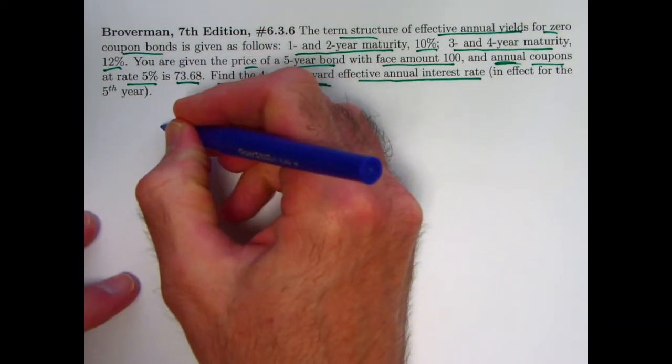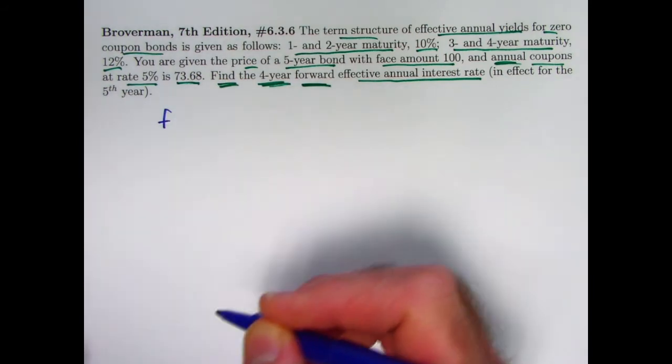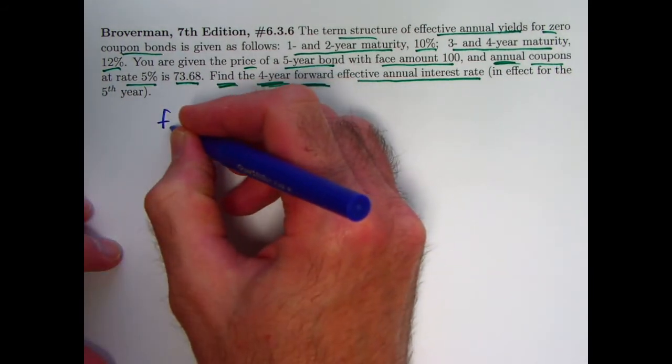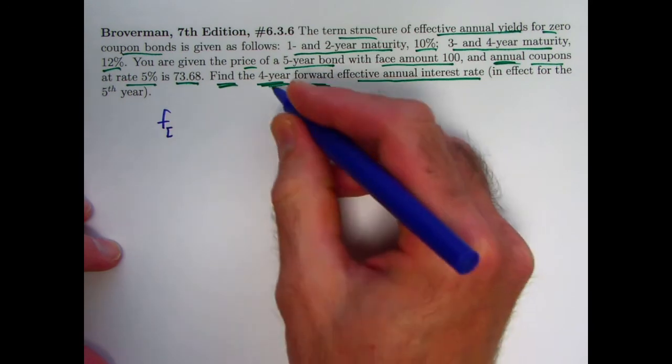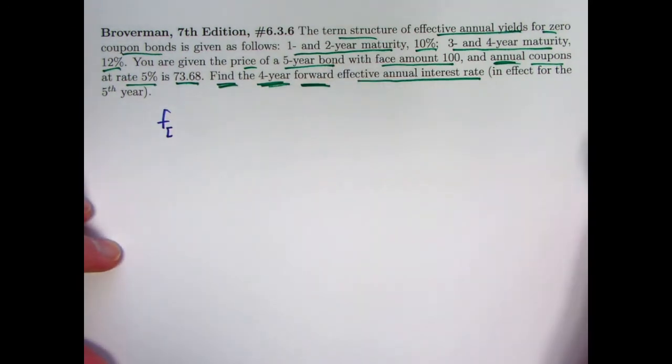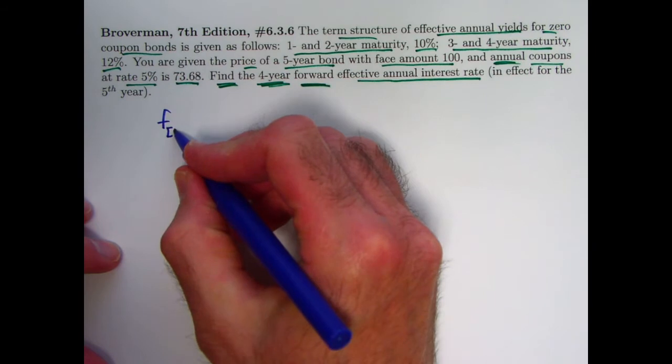Here is the formula for the forward rate that we want. F is the notation for a forward rate. Use a subscript that is the interval that's in question. The four-year forward rate is an interest rate in effect four years from now, for one year here, from time 4 to time 5.